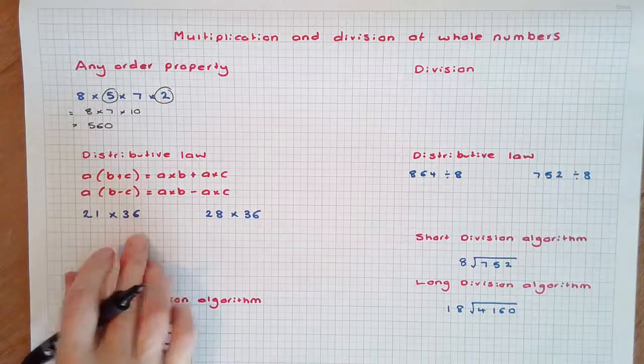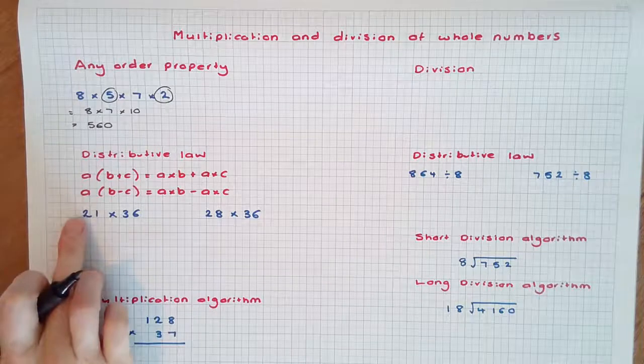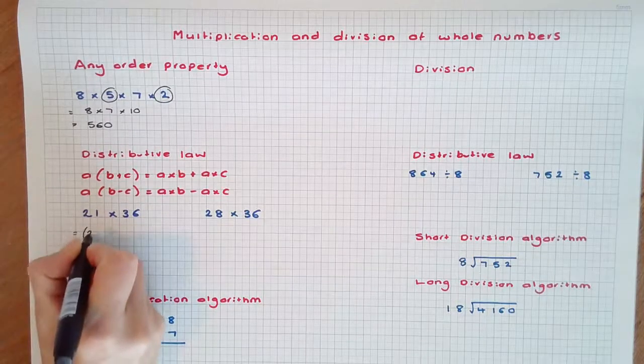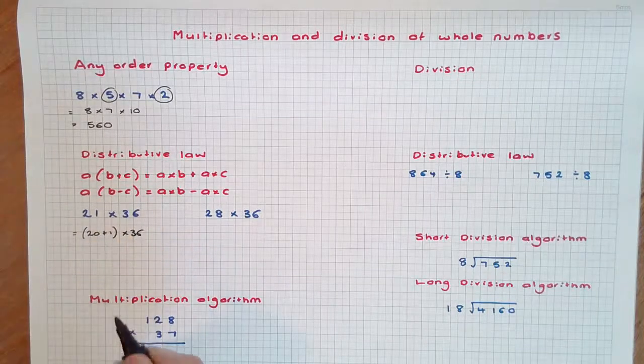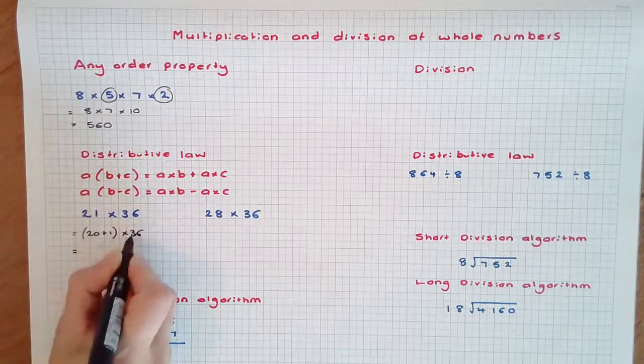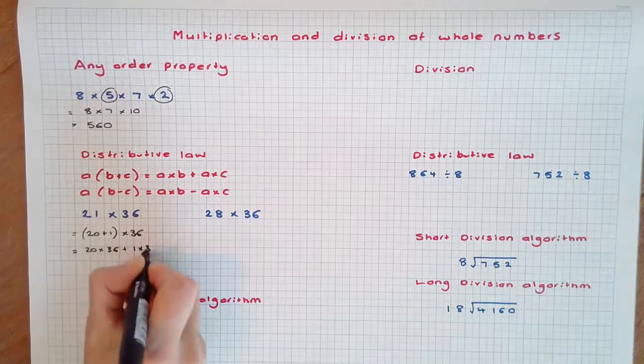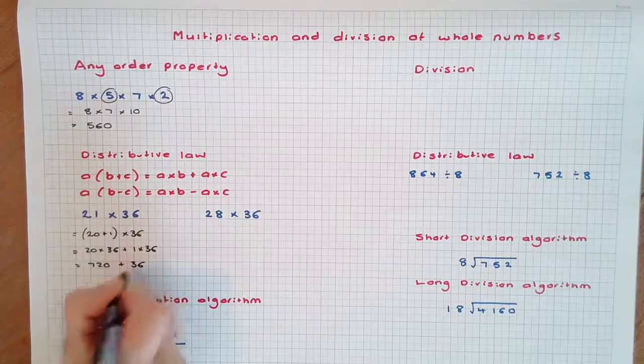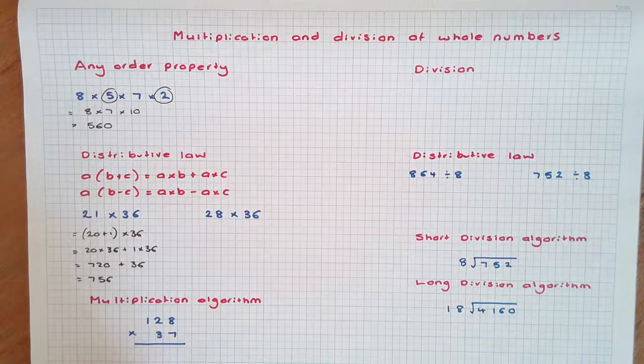Multiplication is distributive over addition and subtraction. 21 × 36 could be rewritten as (20 + 1) × 36. Using the distributive law: 20 × 36 plus 1 × 36. We simply get 720 + 36, which is 756.